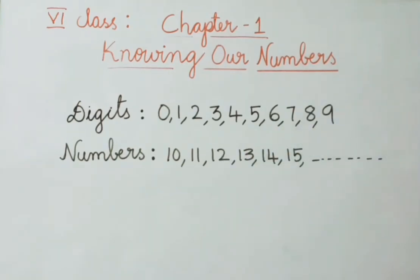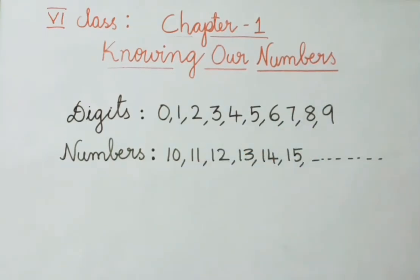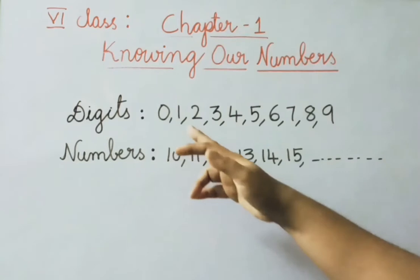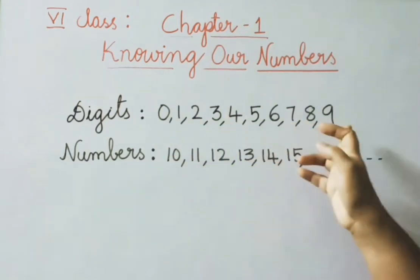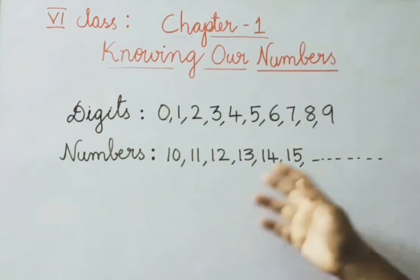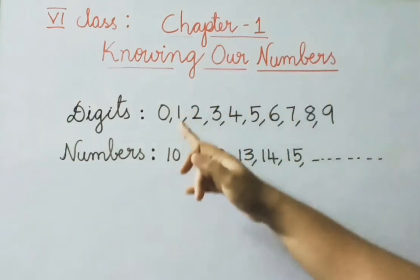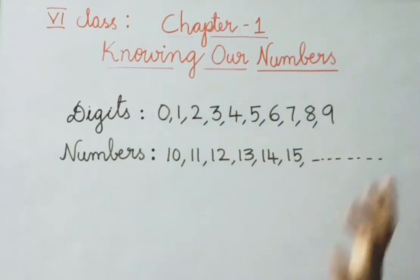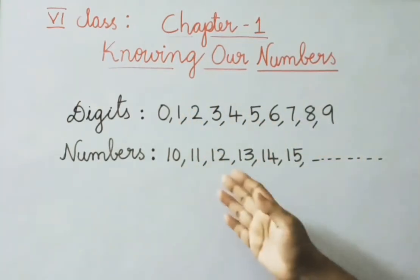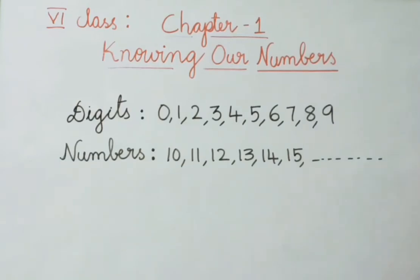What are digits and what are numbers? Digits start from 0 and end with 9. How are numbers formed? Numbers are formed by the combination of digits 0 to 9 — that is 10, 11, 12, 13, and so on — infinite numbers.